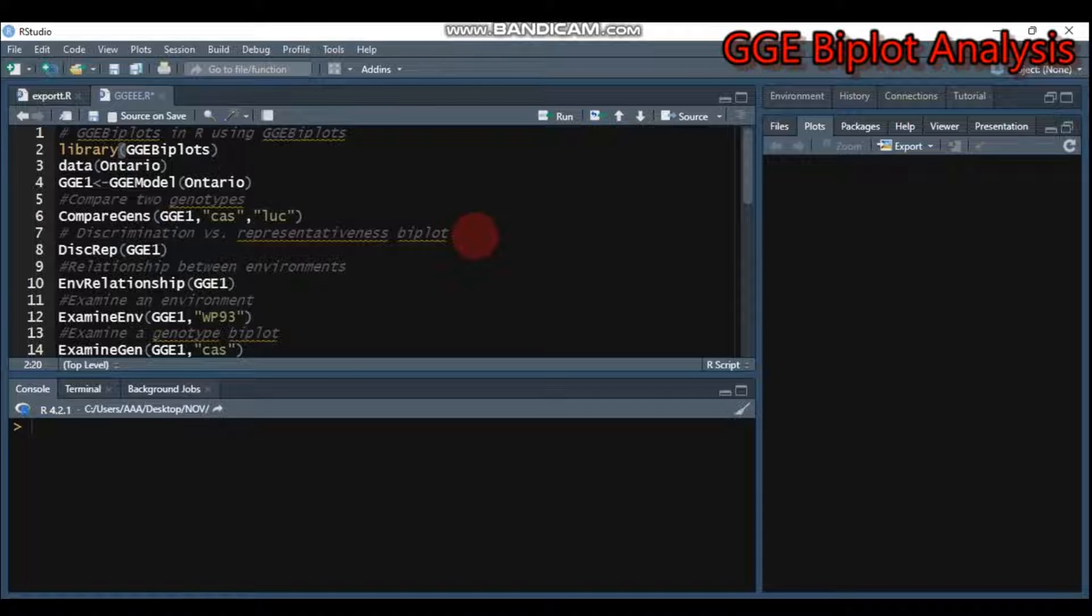Today we'll continue using GGE biplot. As usual, you have to load the GGE biplot package to your R Studio. It is found in CRAN or you can launch it from GitHub. Just submit this using the library function.